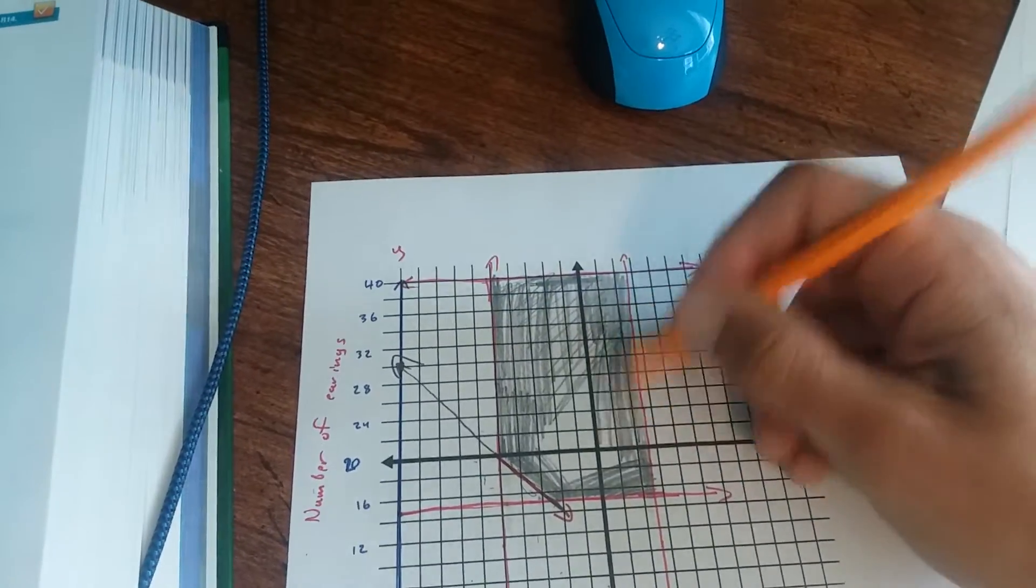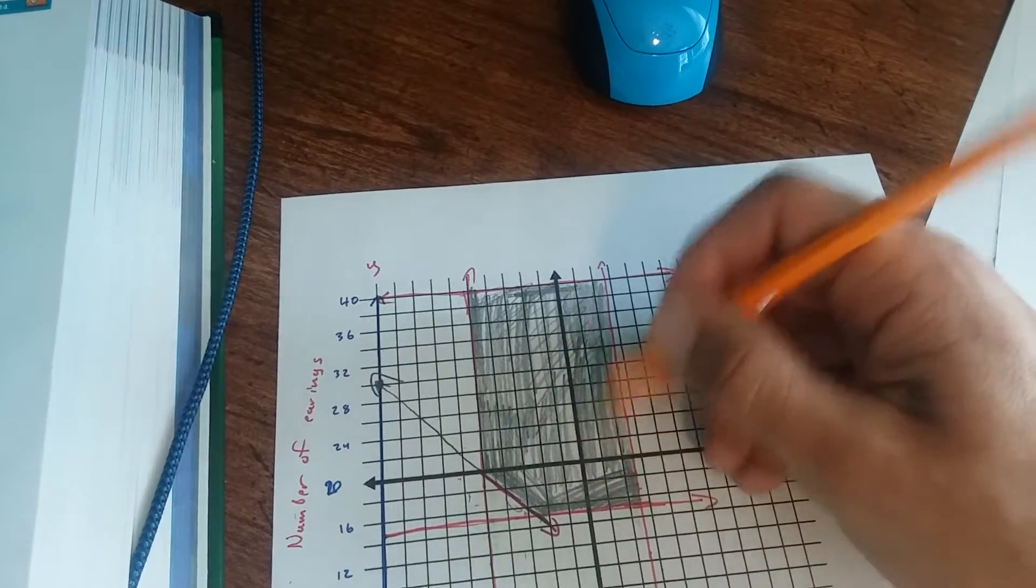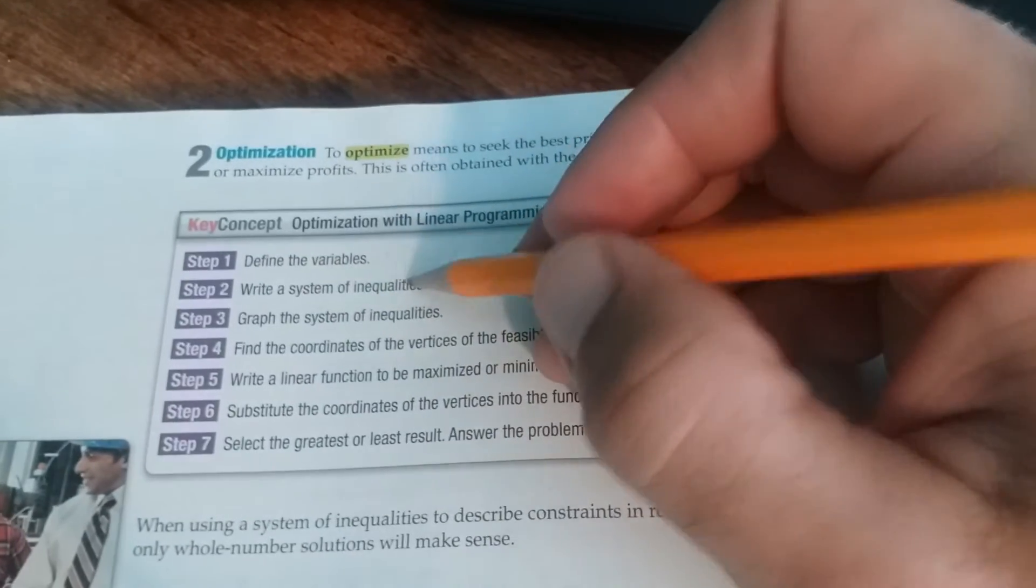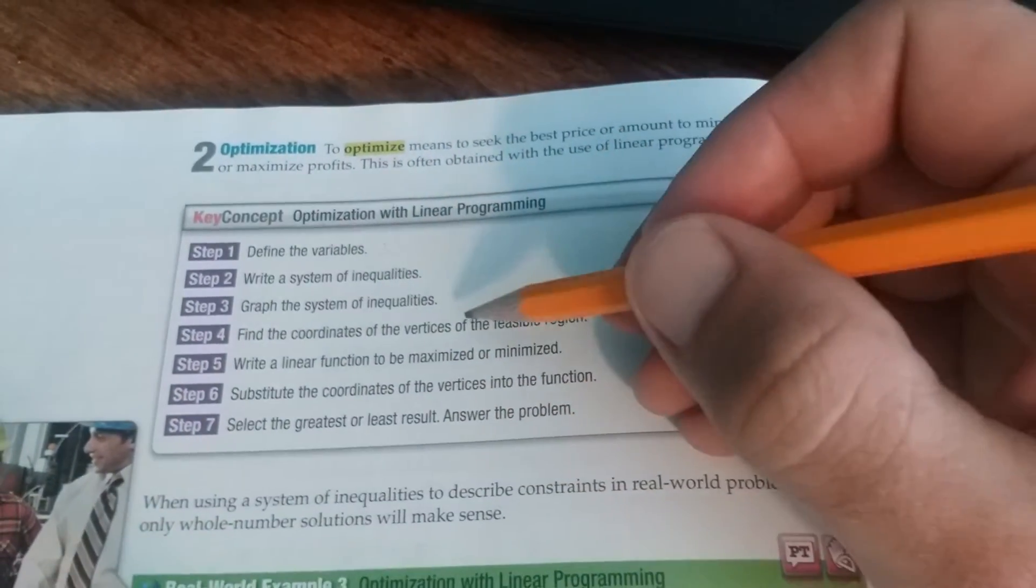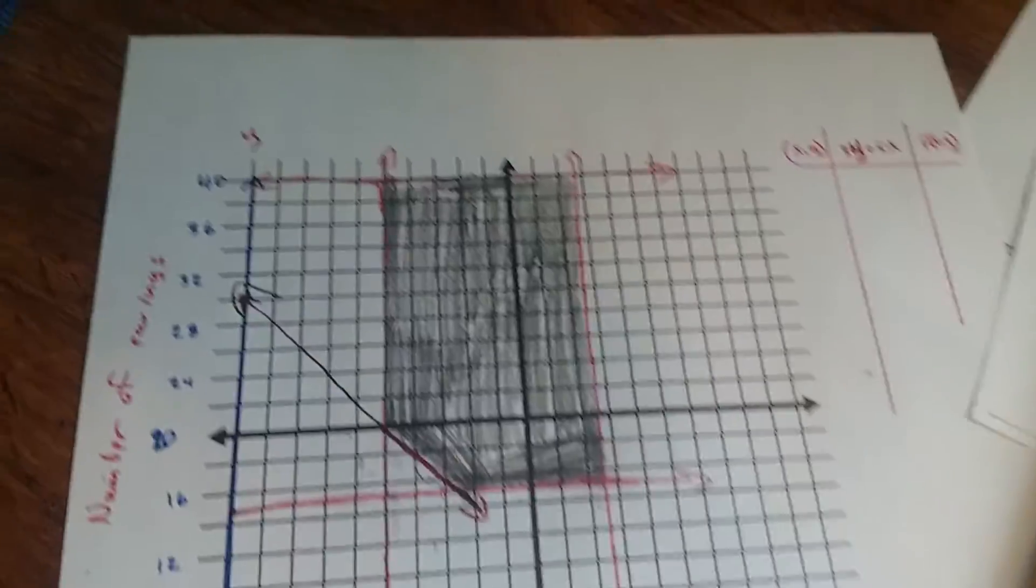So we want to figure out how to maximize our profit. But now, we have to do, so we've done step one, step two, step three. We found the coordinates of the vertices. Well, we've got to list them now. Okay, I'll do that in the next video. We'll see you next time.